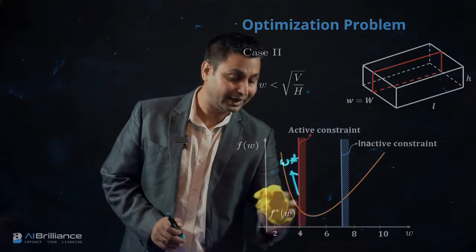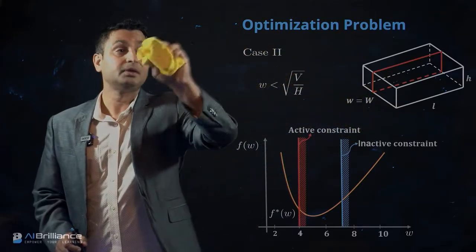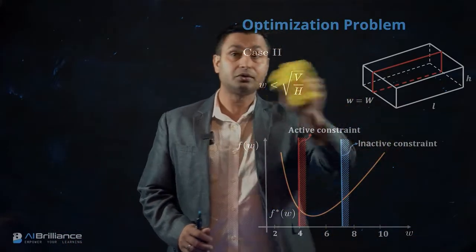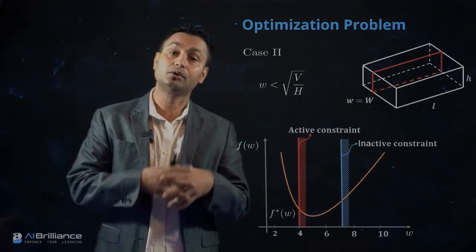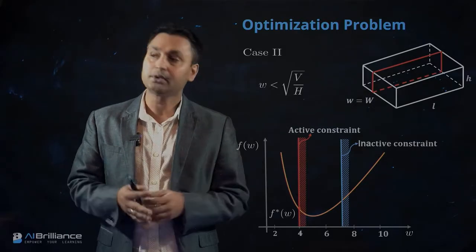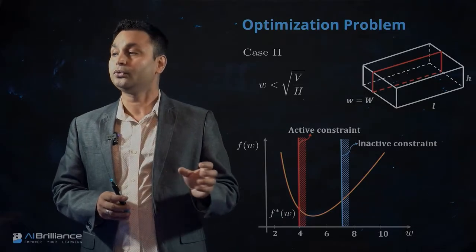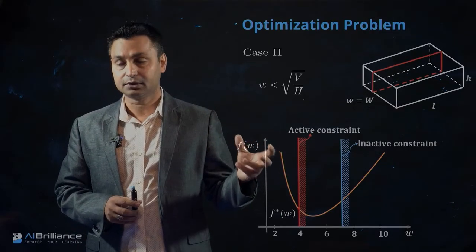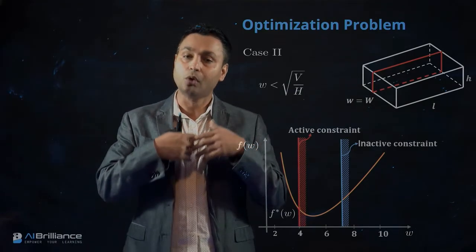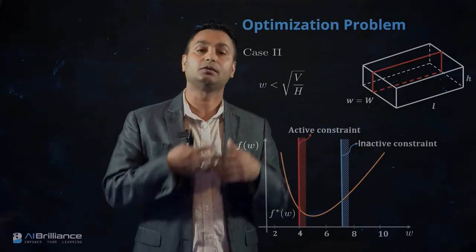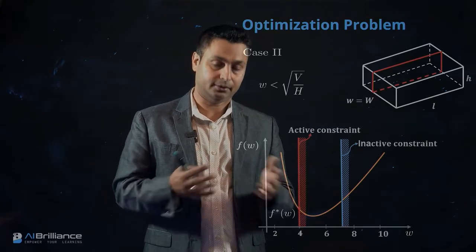So far in this class we have covered some very important concepts: what an optimization problem is — choosing among good solutions from infinitely many — and approaches to solve it including analytical and graphical methods. We also looked into infeasible regions, active constraints, and inactive constraints. We will continue with more definitions and concepts about optimization in the next set of classes using graphical approaches. With that we will stop and come back later. Thank you.